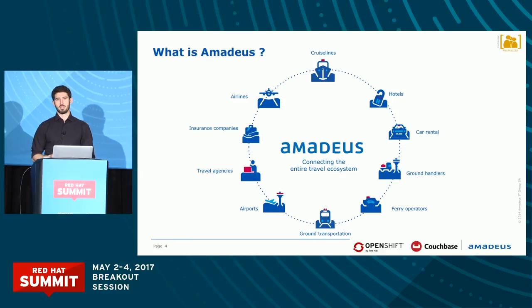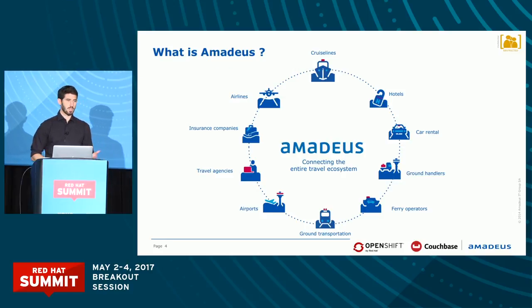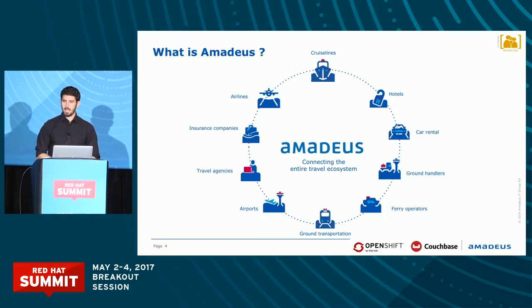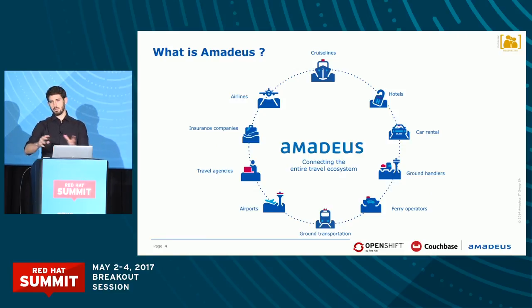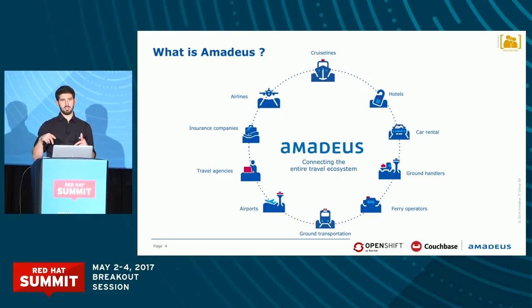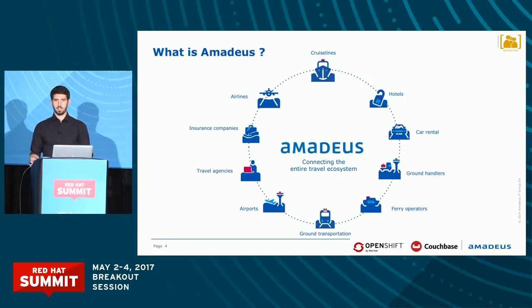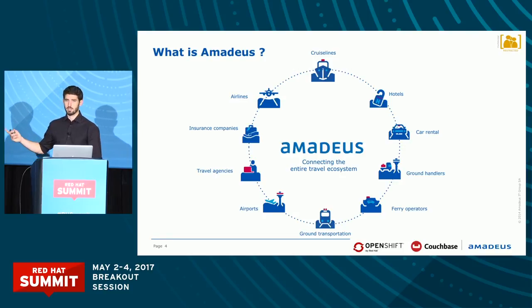Then you wait for the date of your departure, you go to the airport. First thing you do is check in — that's also a service Amadeus is providing. You get your ticket printed — that's also Amadeus ticket printing services. Then you have your luggage and hand it over to the airline company — Amadeus will route your luggage until your arrival. And actually the way your luggage is placed inside the airplane to optimize fuel consumption is also a service Amadeus provides.